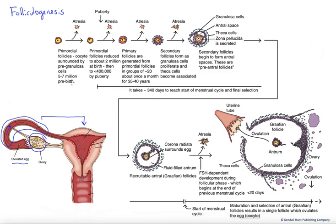Development of the follicles begins in the embryonic phase in females, and it begins with the production of the gamete cells — the oocytes — and the association of cells with those cells, known as pregranulosa cells. So we have this darker layer of pregranulosa cells around the yellow oocyte or egg.